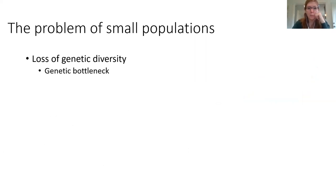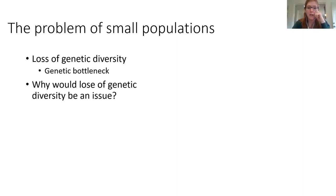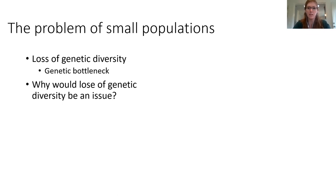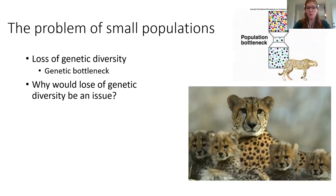So why are small populations such a big problem? The issue really is the loss of genetic diversity. When a population declines to a really small size, it goes through a genetic bottleneck, which means it loses some individual diversity. The ability of a population to adapt means some individuals need to have certain traits that allow them to adapt to the changing climate. If a population has gone through a severe genetic bottleneck, they may not have those traits that allow them to persist. Cheetahs are one example often used — there's very little genetic diversity in cheetah populations now, which makes them really hard to adapt in future scenarios.